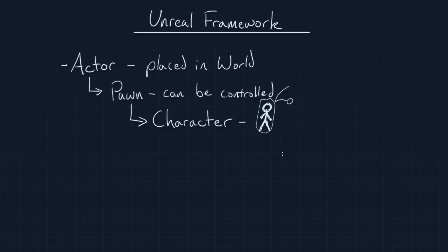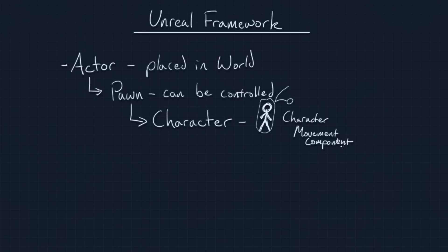The Character also has a special component inside of it called a Character Movement Component. A Character Movement Component controls how fast the Character can move, run, and jump, how high he can jump, and how he navigates — basically all of his getting-through-the-world behavior. It is also aware of things like if he is swimming or falling, so that you can tap into those and use them to make transitions in animation.